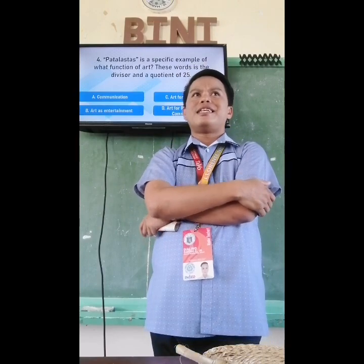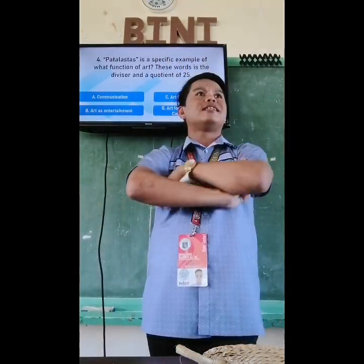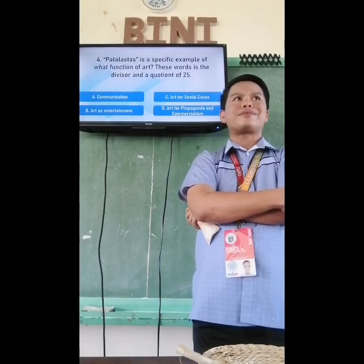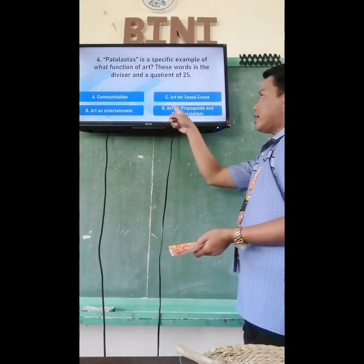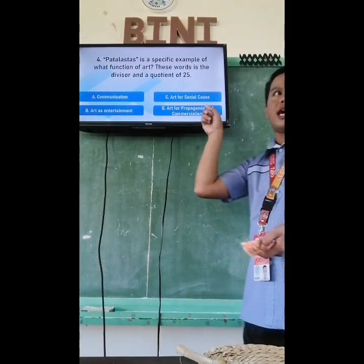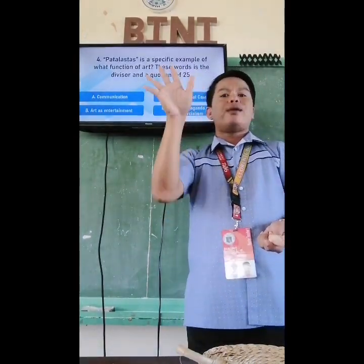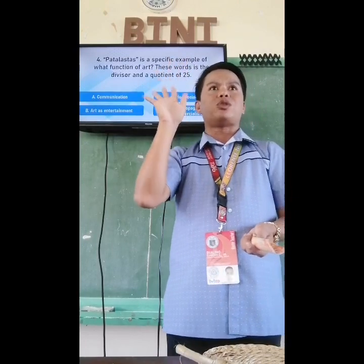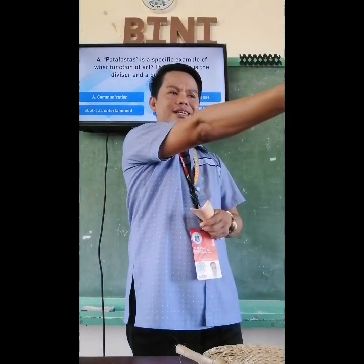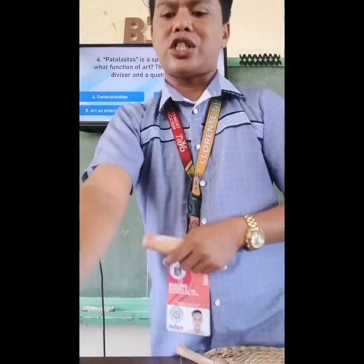Okay, Desiree — letter B. Lelio — okay, letter D. Why letter D? Five. Art for 'o maganda' and commercialism — five words. The divisor and quotient of 25 is five. Correct. Correct. Next question.